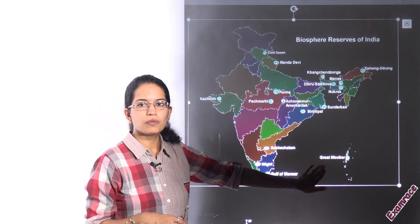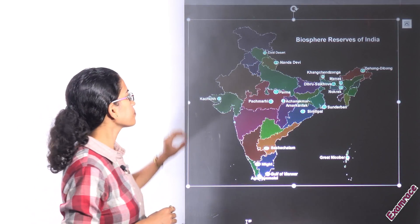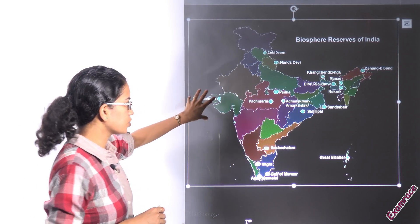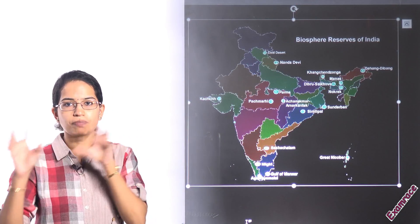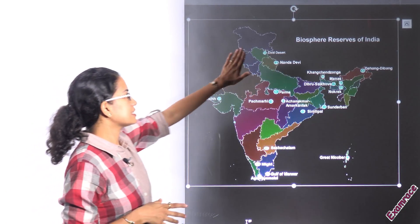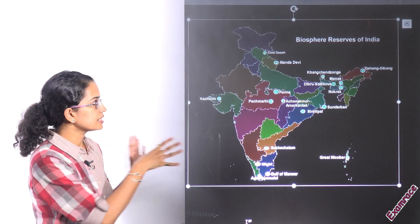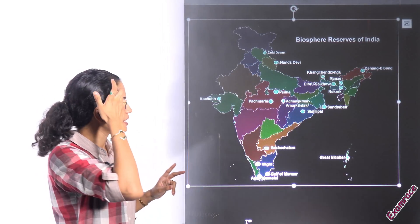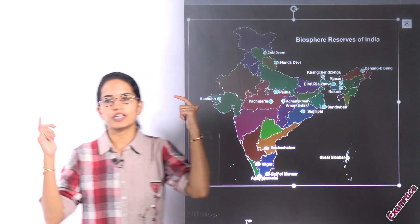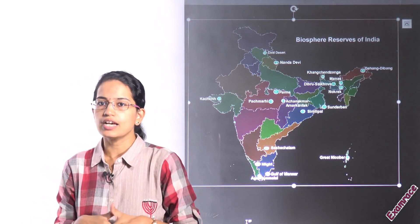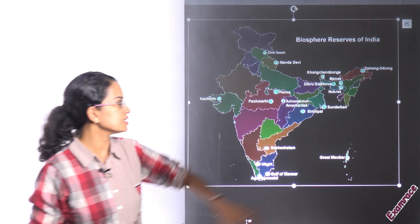Gulf of Mannar lies in Tamil Nadu. Agasthyamalai lies between two states — Kerala and Tamil Nadu. Great Nicobar is in the union territory of Andaman and Nicobar. In Gujarat, you have Kutch. Cold Desert is basically the region of the Pin National Forest lying in Himachal Pradesh. Nanda Devi is in Uttarakhand. Simlipal is in Odisha.